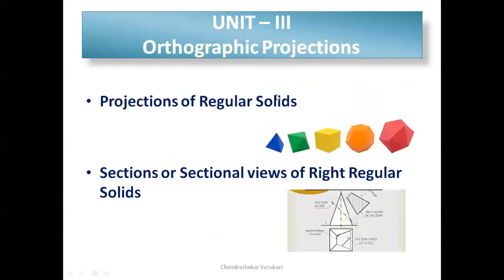Unit three is also orthographic projections and has two categories. The first is projection of regular solids — from prisms, pyramids, and solids of revolution, they may ask any one question inclined to both HP and VP, which is a 15-mark problem. The second category is sections or sectional views of right regular solids, also from prisms, pyramids, and solids of revolution, where you need to draw the sectional view of the given solid for 15 marks.